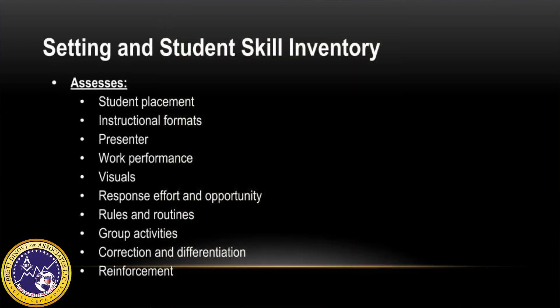You can also utilize the setting and student skill inventory. This inventory assesses the environment to determine which skills are required, and then based on those skill requirements, determines whether or not the student is able to independently display that skill within the environment. This inventory assesses student placement, instructional formats, the presenter, work performance, visuals, response effort and opportunity, rules and routines, group activities, correction and differentiation, and reinforcement.